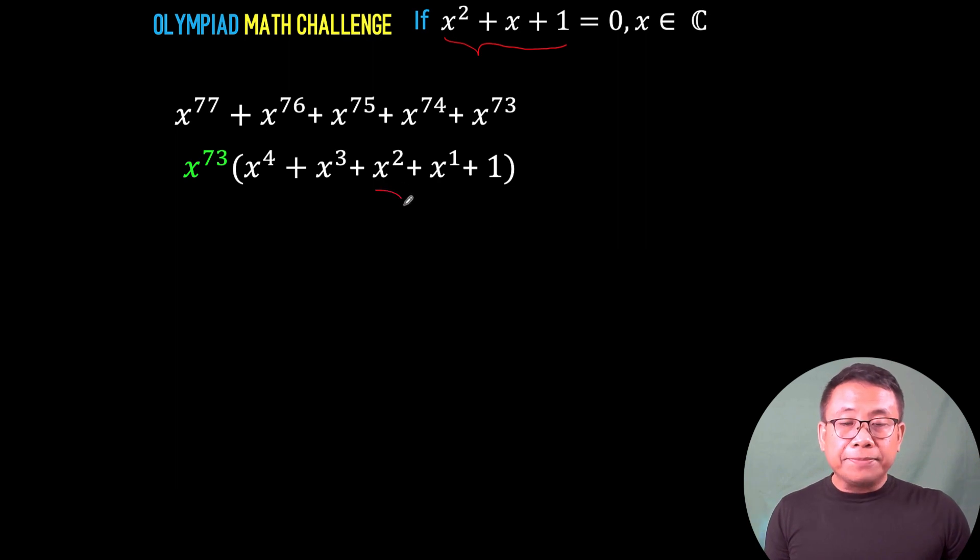Now, look at this part here. You have x² + x + 1 and compare that with the given equation, x² + x + 1. The result of this is equal to 0. That means instead of these three terms, we can replace it with 0. So what we now have is x^4 + x³ + 0 for the second factor, and we just copy the first factor. And of course, you add 0 to any number, the result is still the same number.